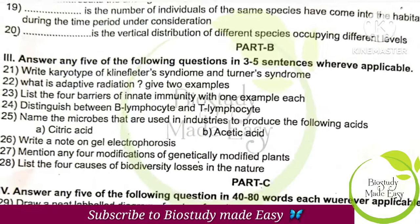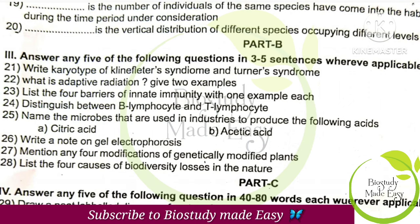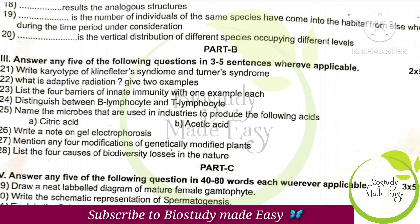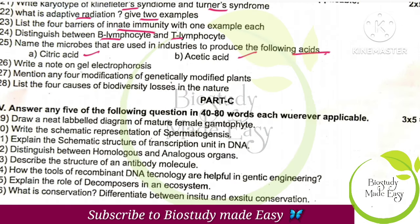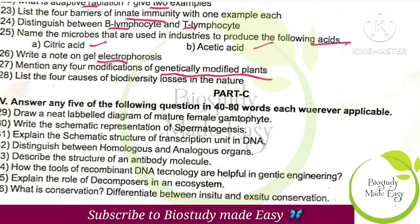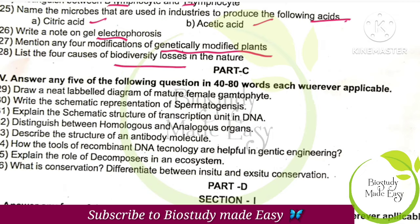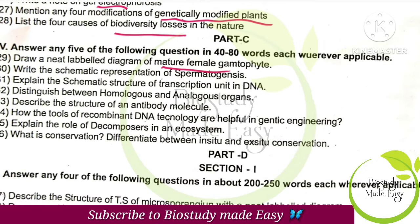For Part B, important questions include: karyotype of Klinefelter syndrome and Turner syndrome; adaptive radiation; barriers of innate immunity; B and T lymphocytes; microbes producing citric acid and acetic acid; note on gel electrophoresis (2 marks); four modifications of genetically modified plants; and list four causes of biodiversity losses in nature.